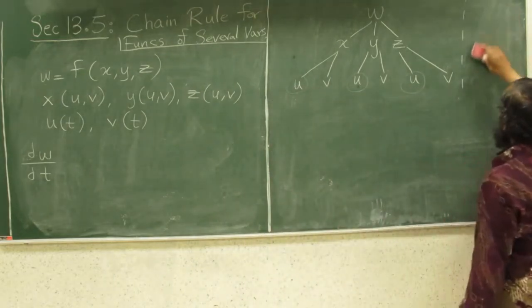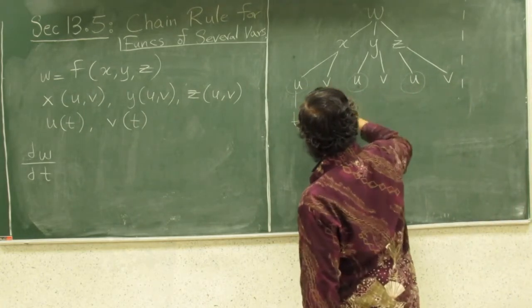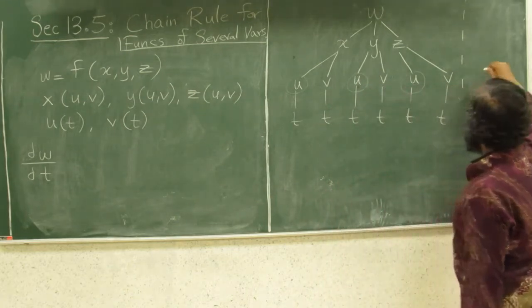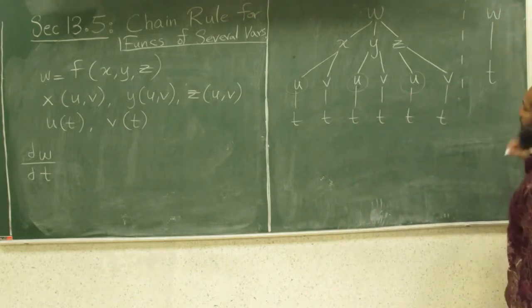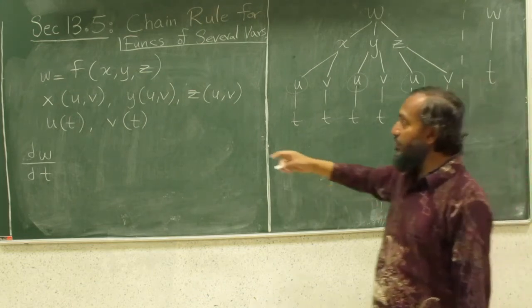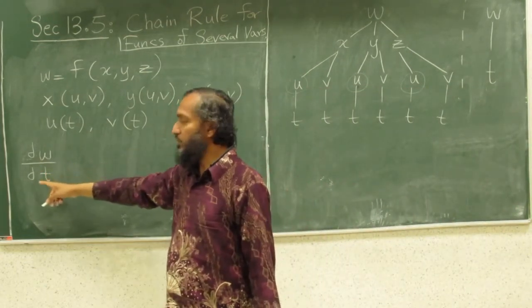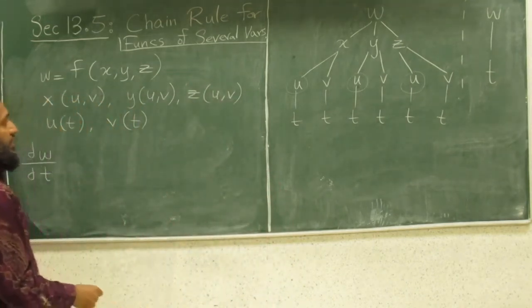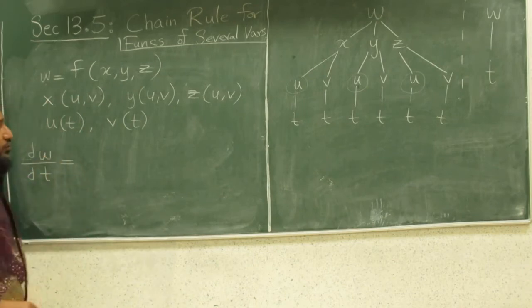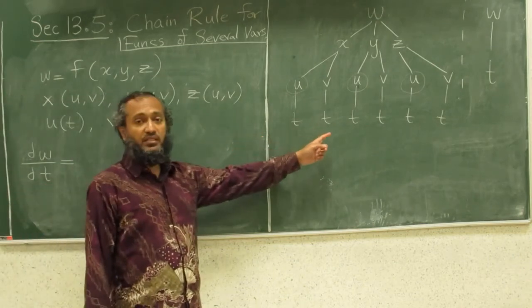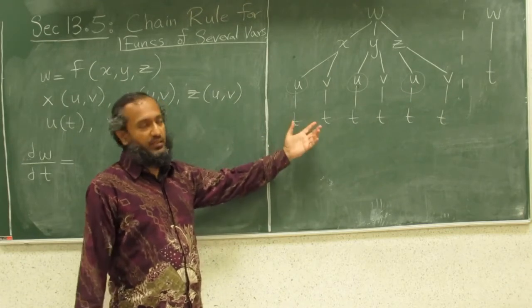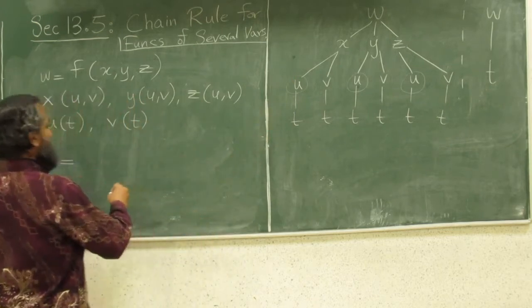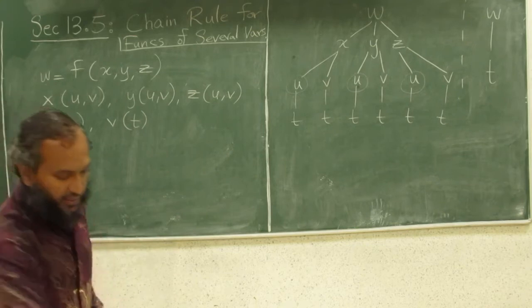In this picture, when we go ahead and consider this as functions of t, think of it, w is just a function of t. And that's why I have written straight dw straight dt. I am going to write it as one giant expression.